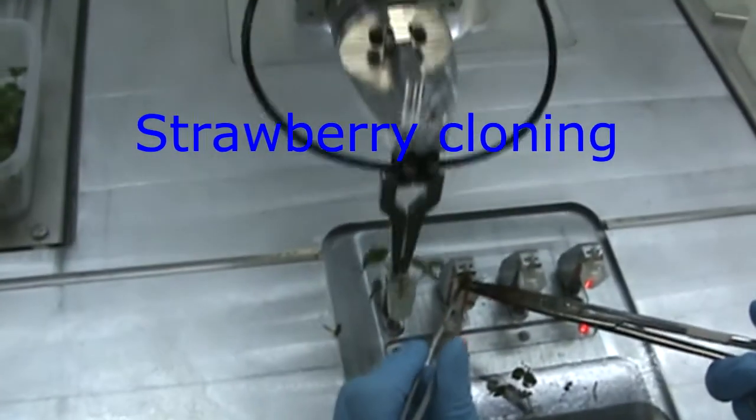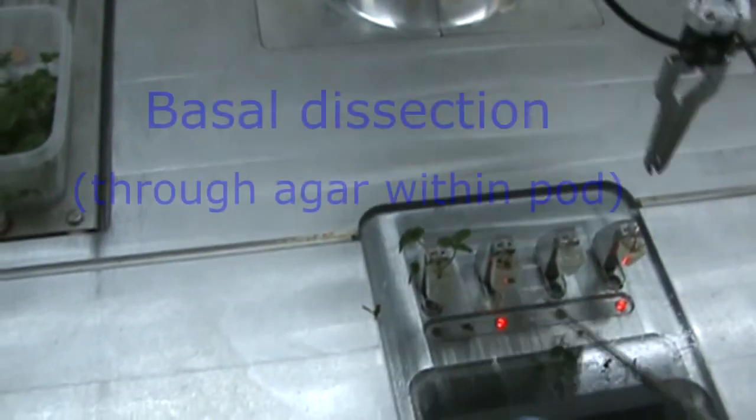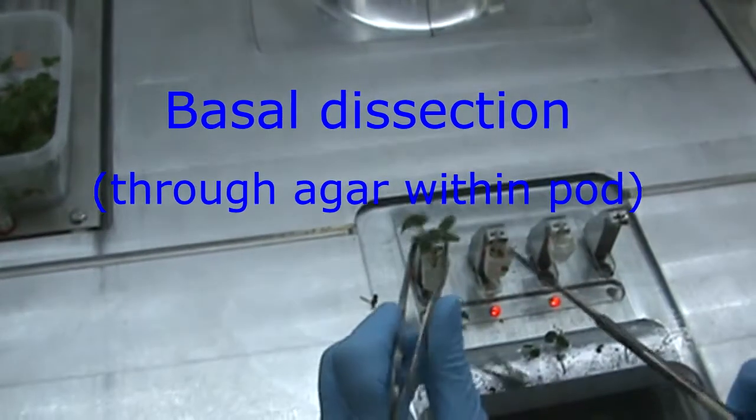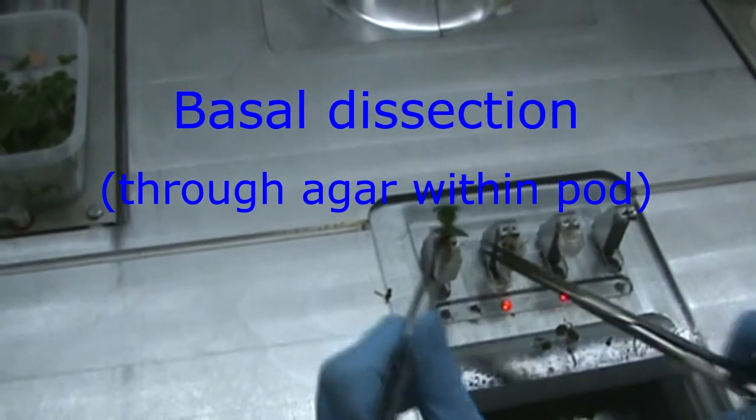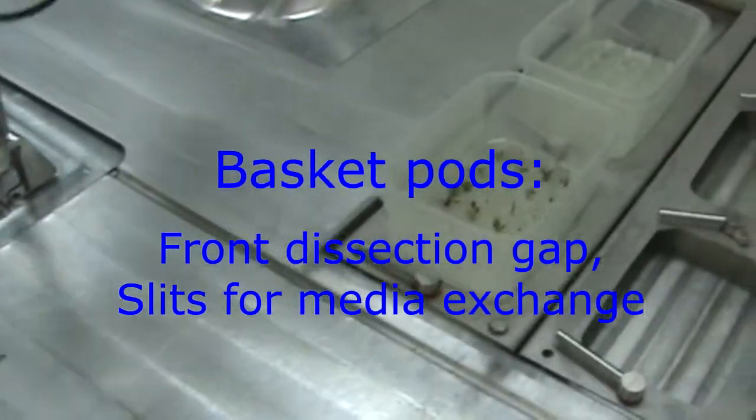Strawberries grow differently to previous examples. They require a basal dissection through the agar rather than aerial tips and nodes. In this case, the input plantlets are in conventional pods, but the dissected explants are transferred to a basket pod of different design.